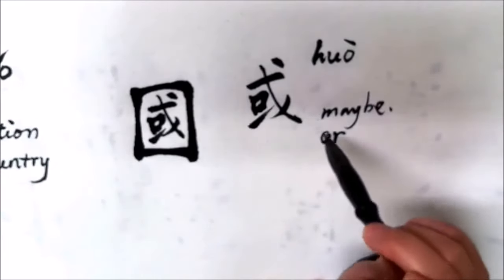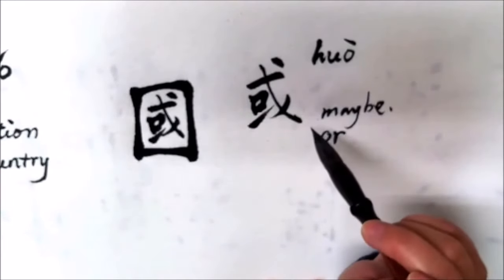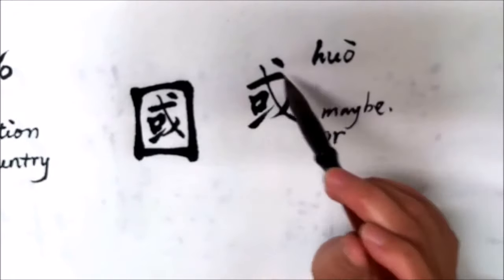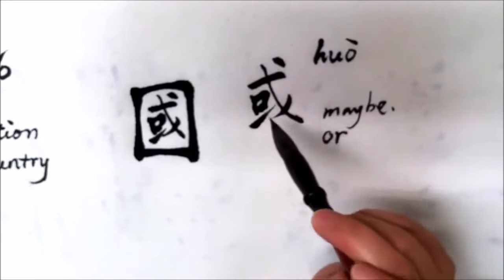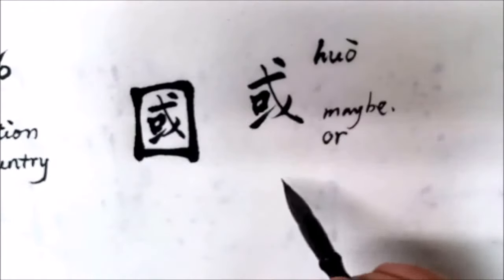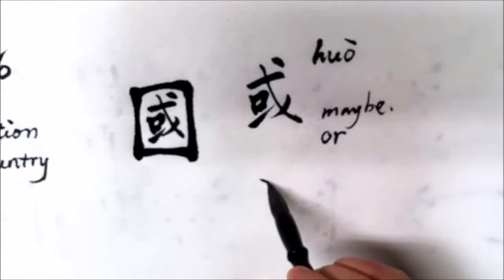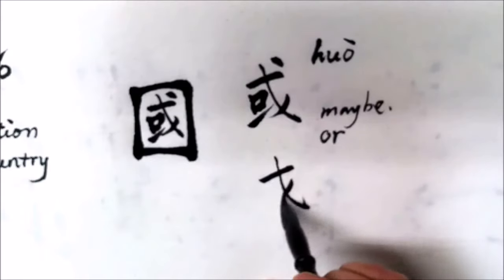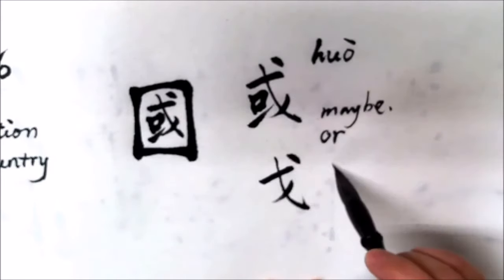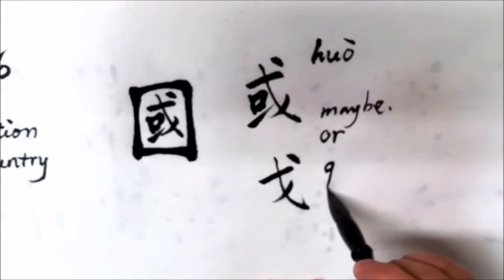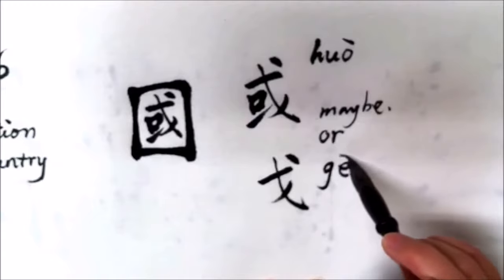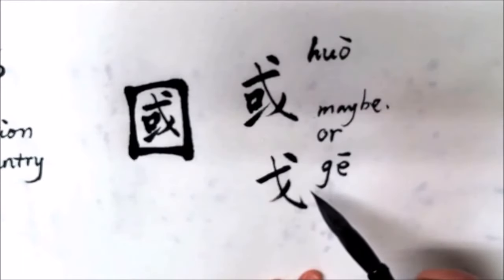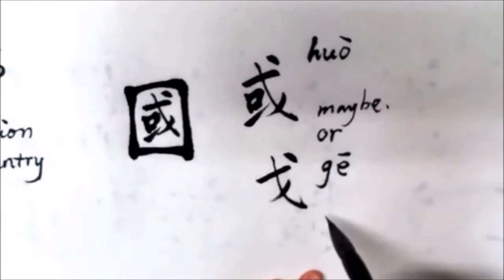Actually, this is not its original meaning. In the character 或 (huò), we can see the character 戈 (gē). This character 戈 (gē).